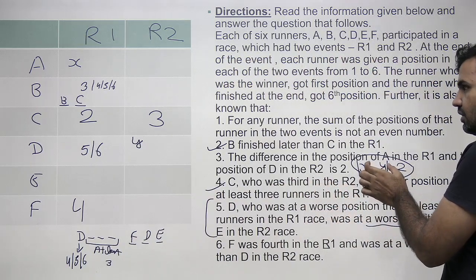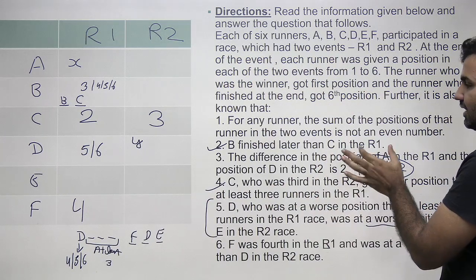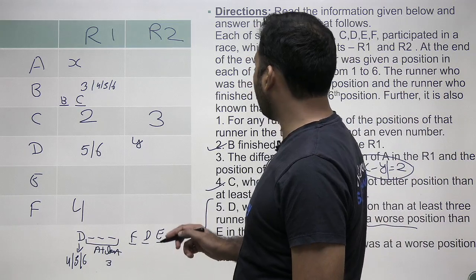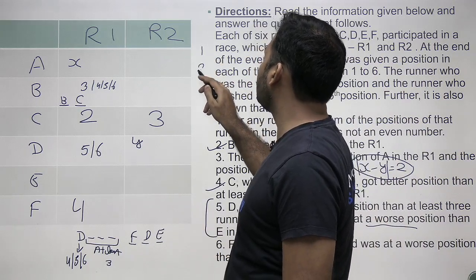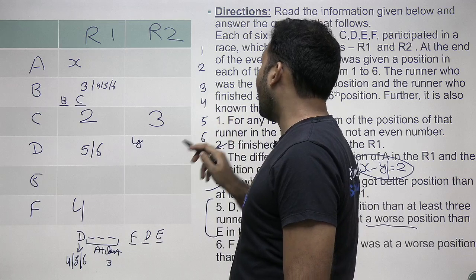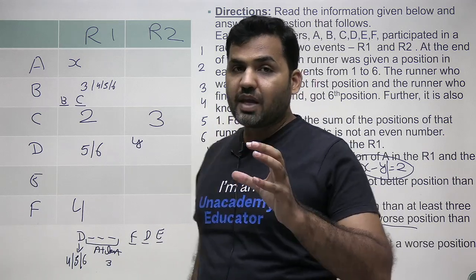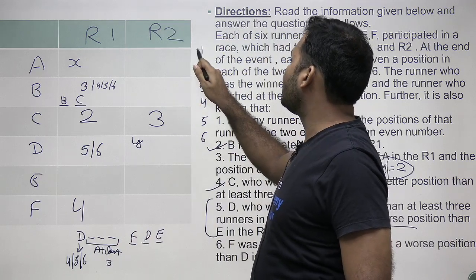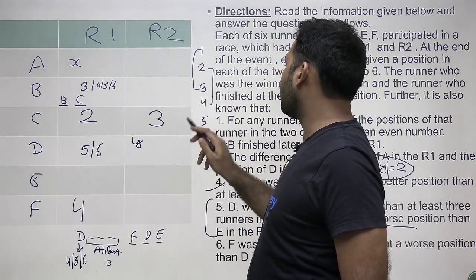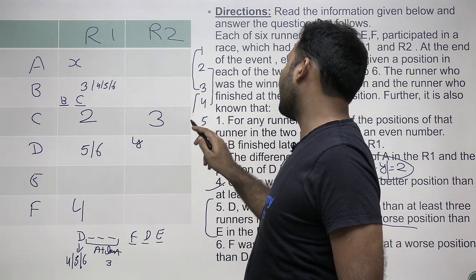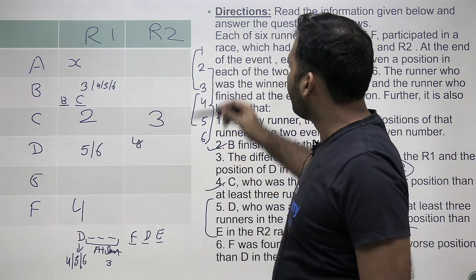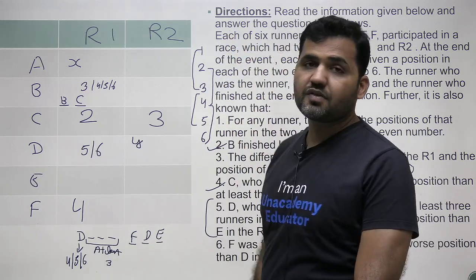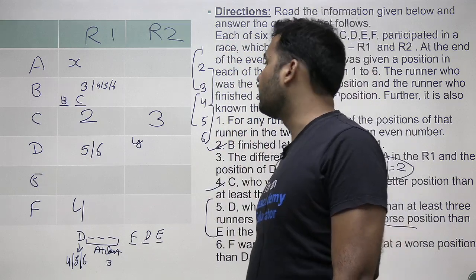The difference between A's rank in R1 and D's rank in R2 must be 2. Writing out the numbers 1 through 6, the pairs with a difference of 2 are: (1,3), (2,4), (3,5), and (4,6). All of these pairs have a difference of 2.